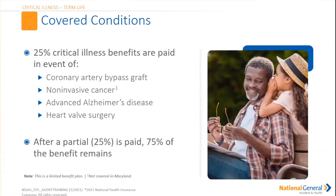For covered conditions, 25% of the critical illness benefit is paid in the event of a coronary artery bypass graft, a non-invasive cancer, advanced Alzheimer's disease, and a heart valve surgery. After that 25% is paid, the remaining benefit of 75% will remain.